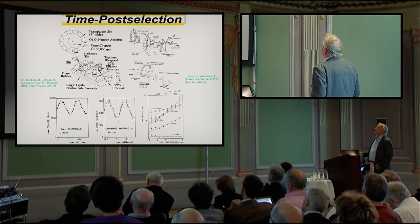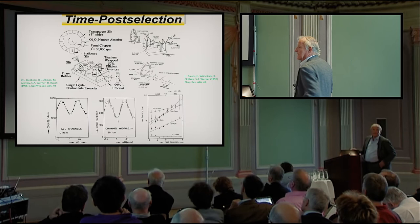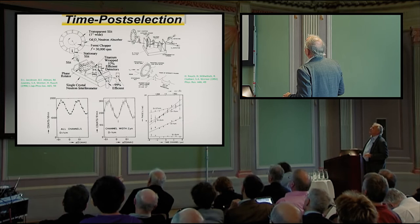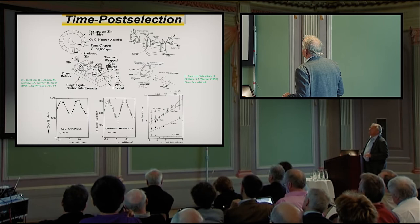Also, you can make post-selection in the time domain. You have a chopper in front of that, and that produces neutron bursts. That's not the packets, it's the bursts, because the packets are much smaller. But you see there, you can produce bursts which are shorter than the dimension of the interferometer. And nevertheless, you can see again the interference pattern.